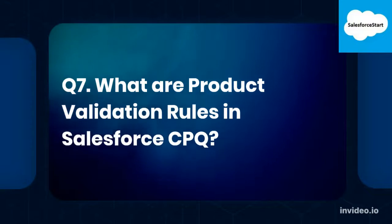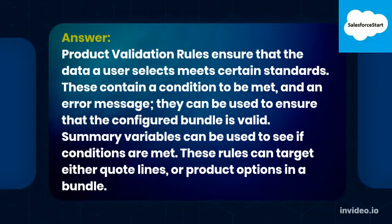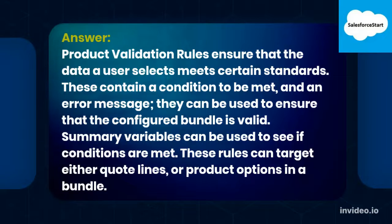Q7. What are product validation rules in Salesforce CPQ? Product validation rules ensure that the data a user selects meets certain standards. These contain a condition to be met and an error message. They can be used to ensure that the configured bundle is valid. Summary variables can be used to see if conditions are met. These rules can target either quote lines or product options in a bundle.